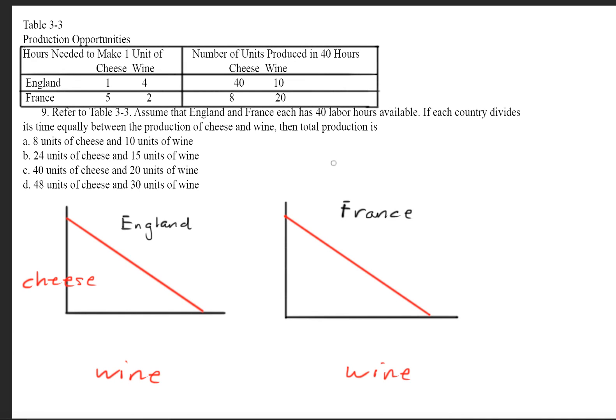So this question says, refer to table 3-3. Assume that England and France each has 40 labor hours available. If each country divides its time equally between the production of cheese and wine, then total production is... To begin this question, we look at the table and we're going to cross this out. This is not going to be used. Instead, we're going to focus only on this section right here.